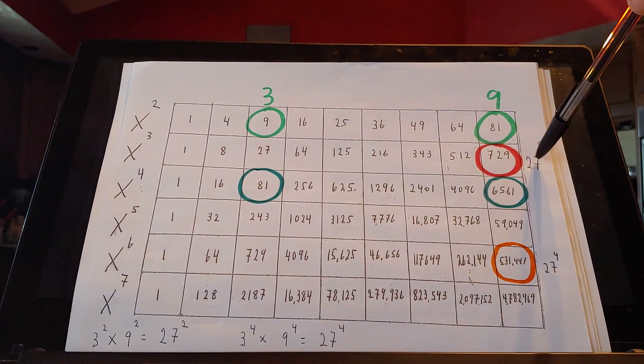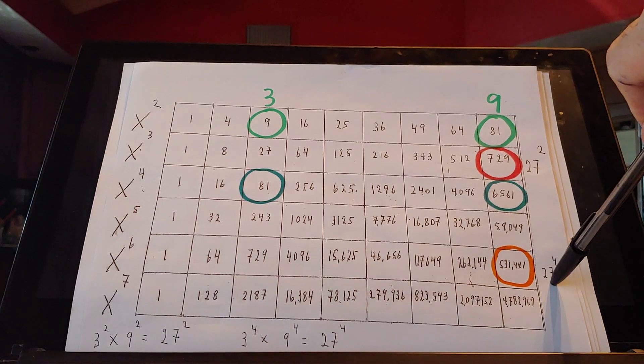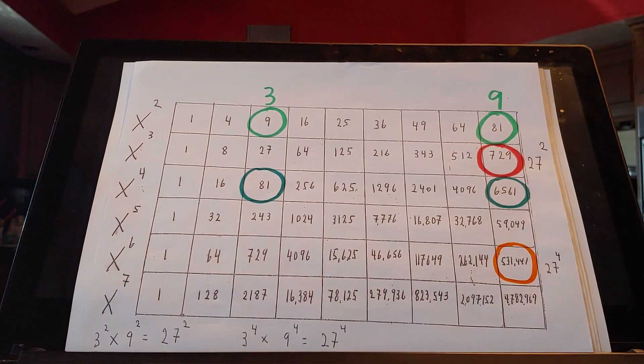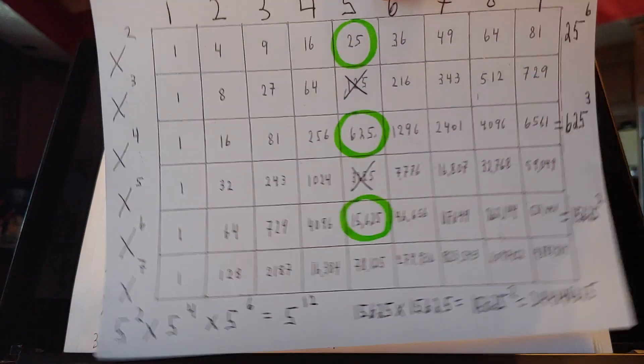531,441, which is 27 squared — actually 27 to the fourth. And if you agree, we would get a sequence that continues like that onto infinity.